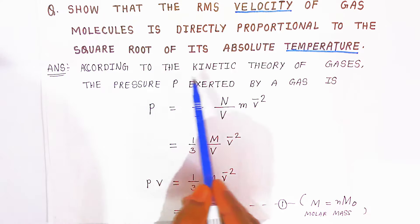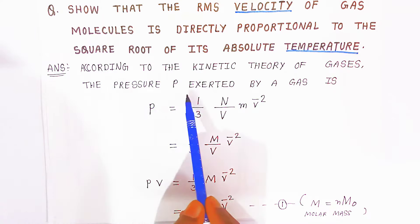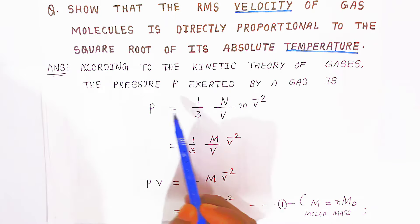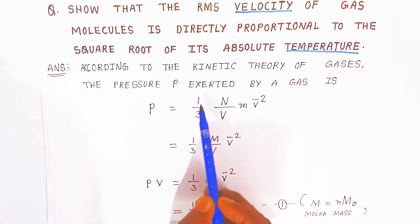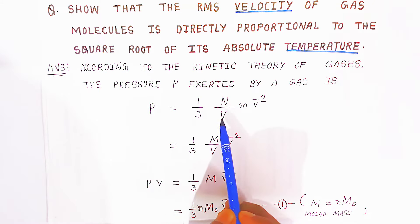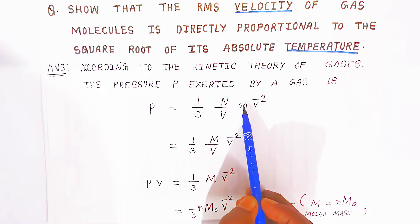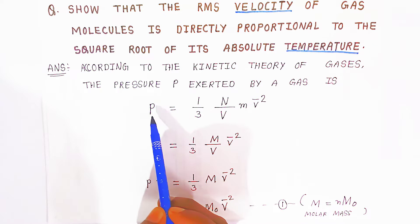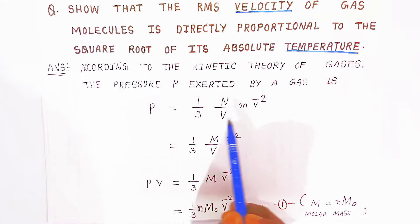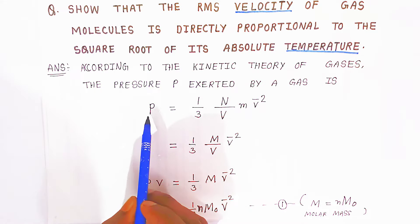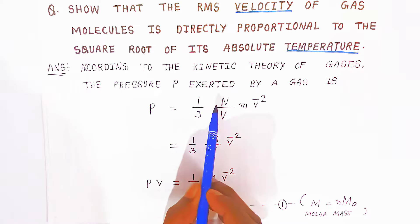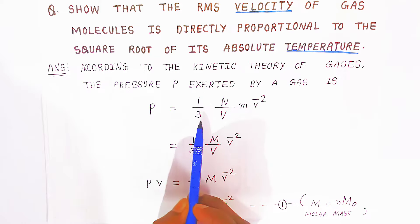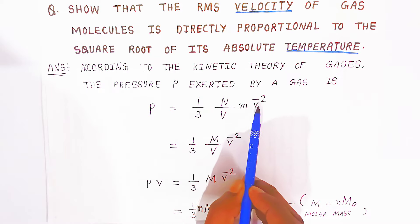According to the kinetic theory of gases, the pressure exerted by any gas molecule is given by the expression: P = (1/3) × (N/V) × m × v̄². You have to remember this expression. Pressure equals 1 upon 3, N upon V, mass into velocity squared.